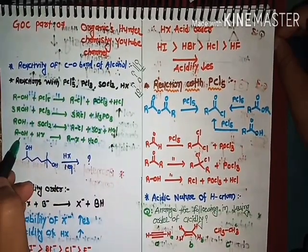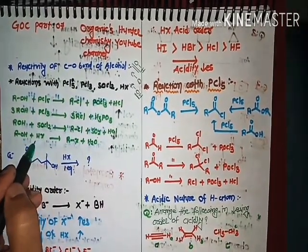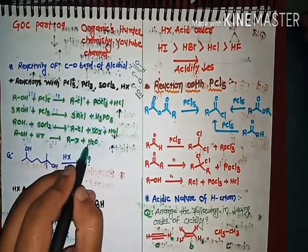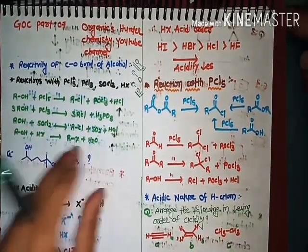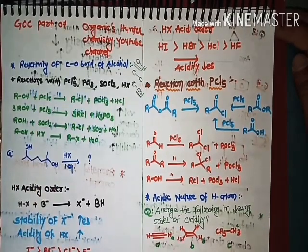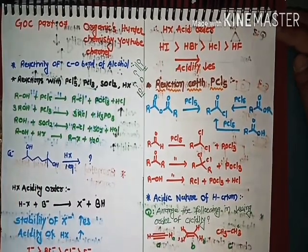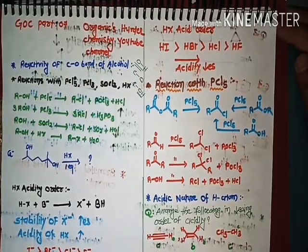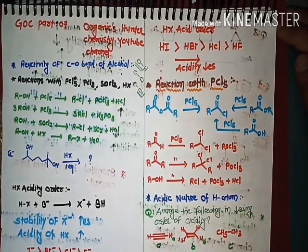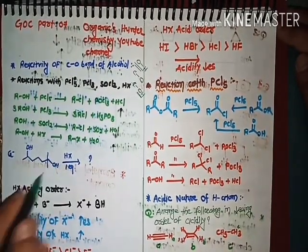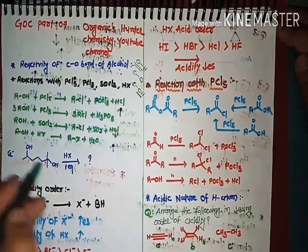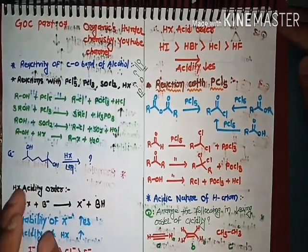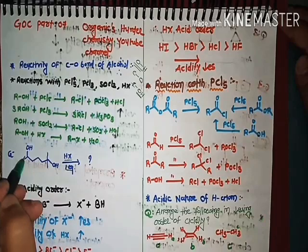If I react an alcohol with a strong acid HX, I will get RX plus H2O. As we saw in the last video, how the intermediate is formed — let's see with an equation. In this question, there are two OH groups and the reaction is with one equivalent of HX.